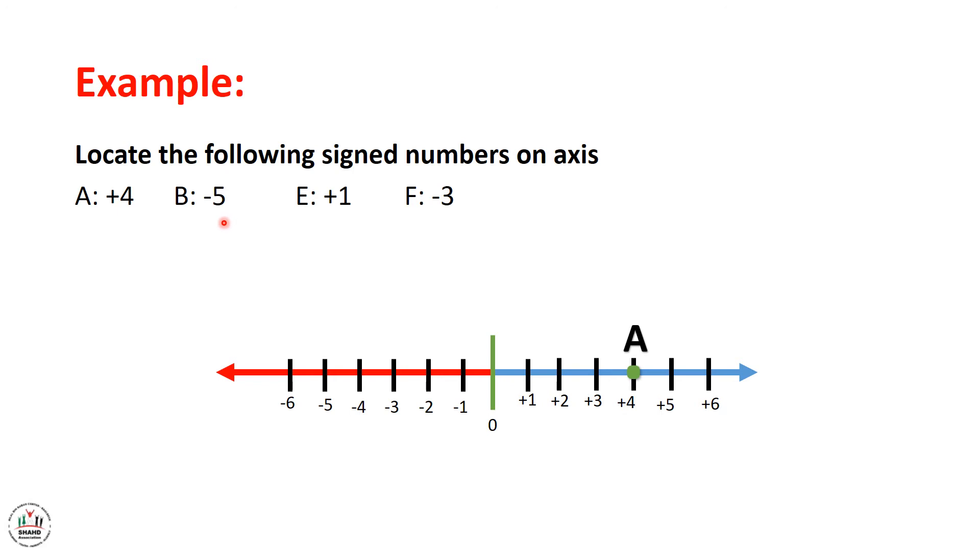B equal to minus 5. So we should move by 5 numbers to the left starting from 0, because the sign of 5 is negative. So minus 1, minus 2, minus 3, minus 4, minus 5. And we locate a point B.